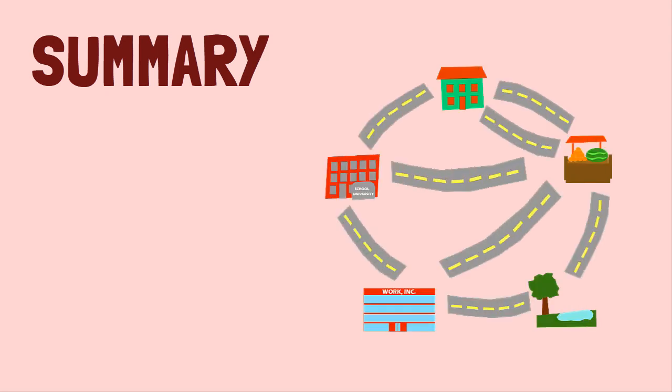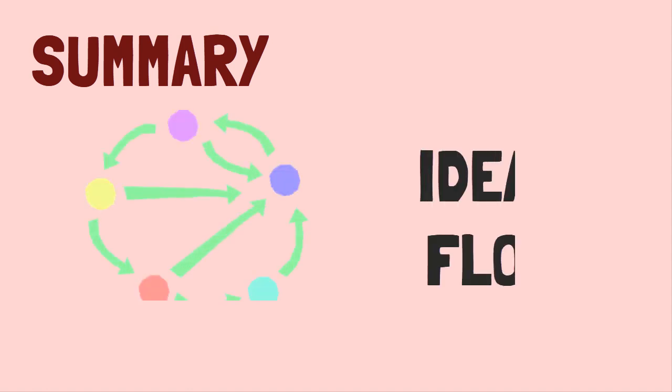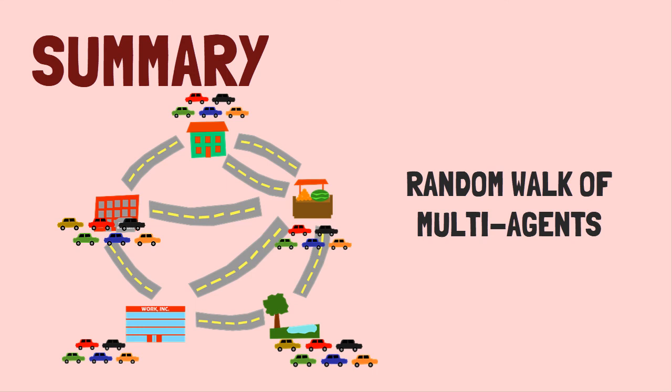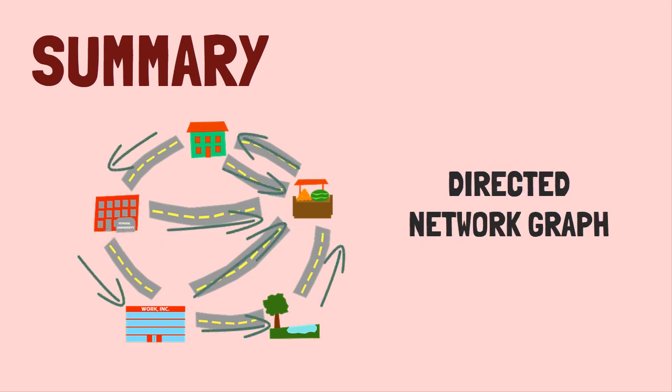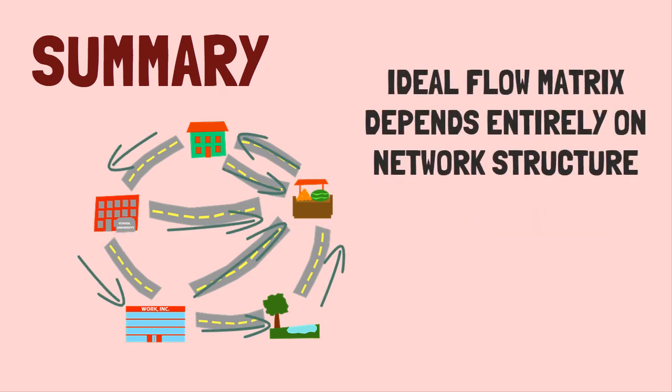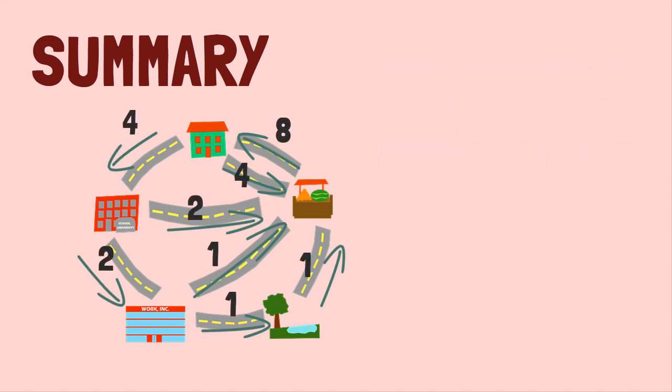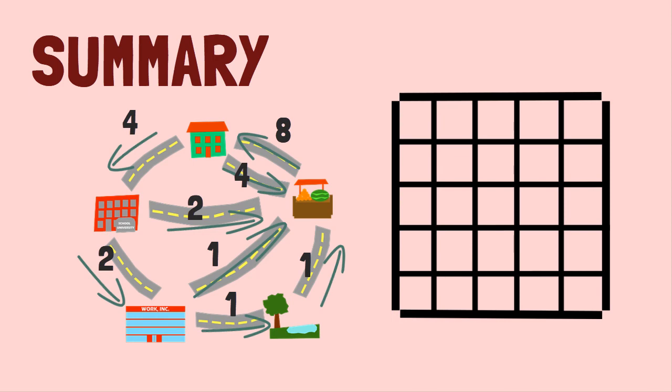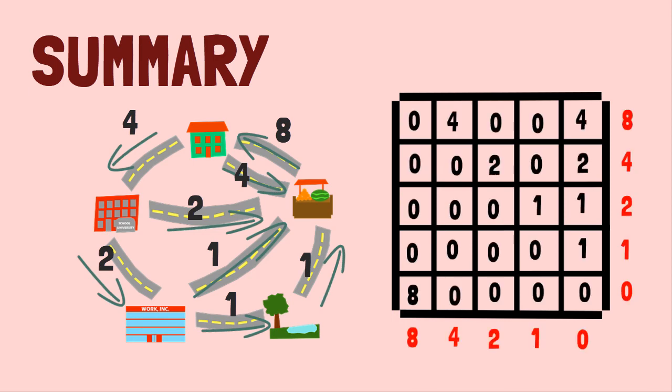In summary, we discussed, through an example of road networks, how a model of ideal flow was created based on a random walk of multi-agents in a directed network graph. We found that the ideal flow matrix depends entirely on network structure, and that this ideal flow will always be a P-magic matrix, and can be computed through linear algebra.